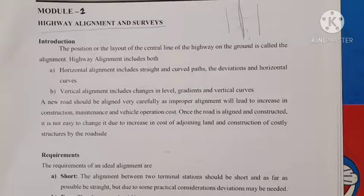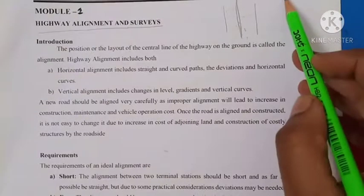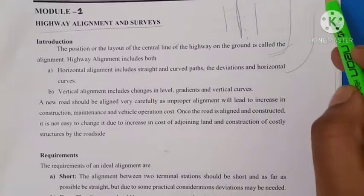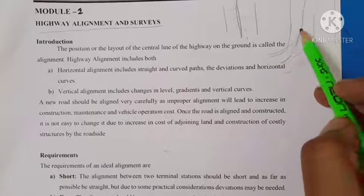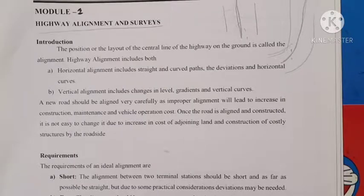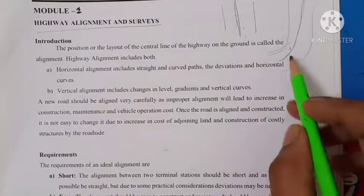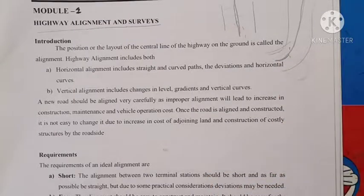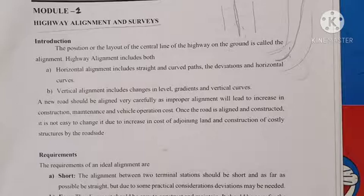The alignment of a highway includes both the horizontal alignment and the vertical alignment. The horizontal curve alignment includes curved paths, deviations, and the degree of deviations. The vertical curve includes changes of level and gradient. These components are all included in the alignment category.